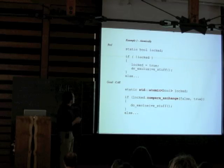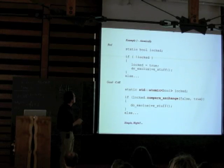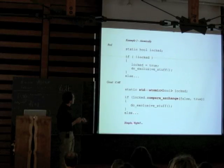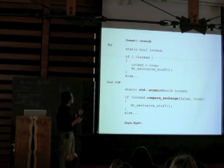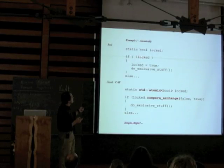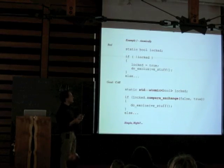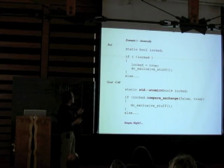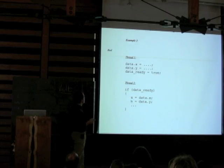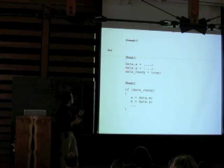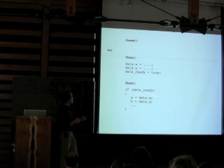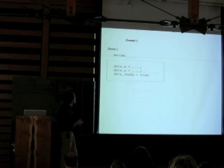In the standard this is called compare_exchange; I have a tendency to call it CAS — compare and set, compare and swap, test and set — there are many names for it. So that's an example about making things atomic. It's not completely simple: in lock-free programming you do have to remember to read between the lines. Now we want to set some data, let somebody know that data is ready, and then another thread will check that the data is ready and use it. That looks completely normal except it's broken.